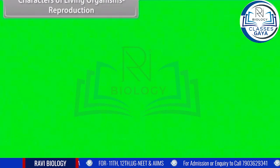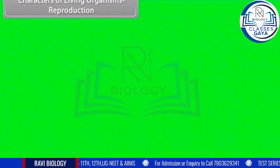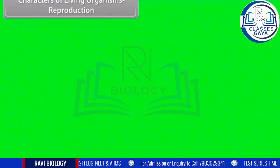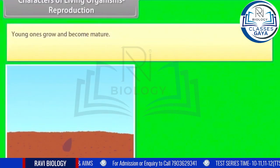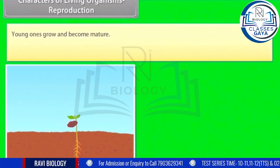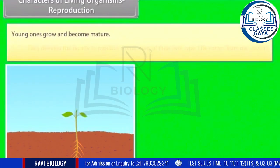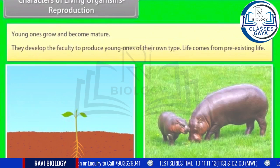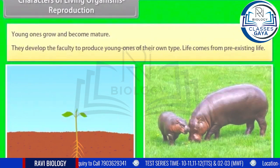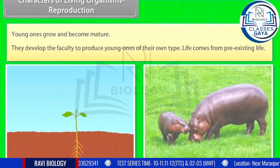Characters of living organisms — Reproduction: young ones grow and become mature, and develop the ability to produce young ones of their own type. Life comes from pre-existing life.